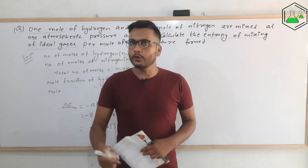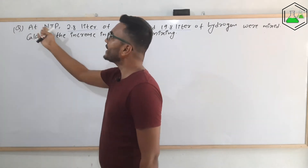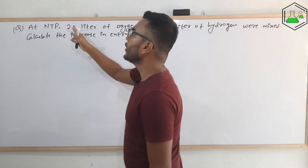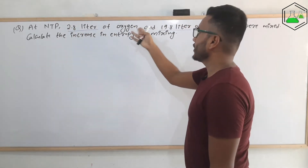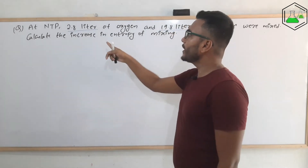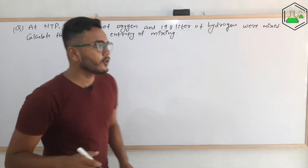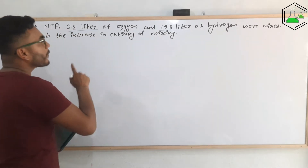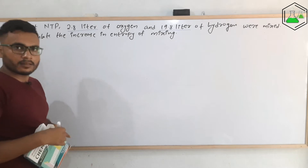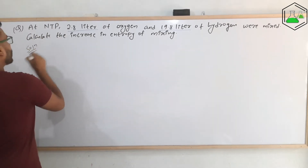Similarly, let us see another numerical problem. This is the question of the second numerical problem. At NTP (normal temperature and pressure), 2.8 liters of oxygen and 19.8 liters of hydrogen were mixed. Calculate the increase in entropy of mixing of ideal gases. In this case, the number of moles is not given; instead, the volume of both gases is provided.